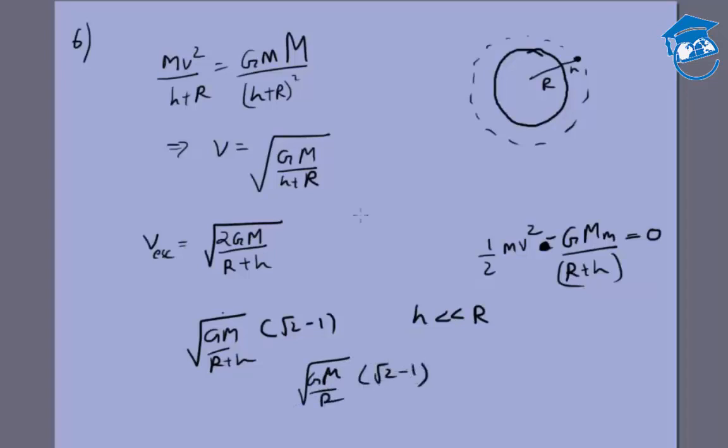And we already know that since GMm by R squared is equal to mg, this is the definition of mg, so m and m can cancel, g will be root of GM by R squared. So root of GM by R can be written as gR, that means this can be written as root of small g times R.